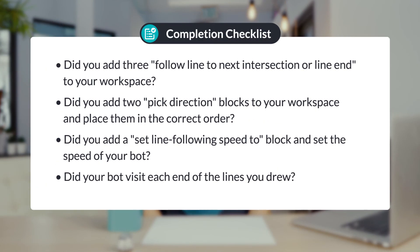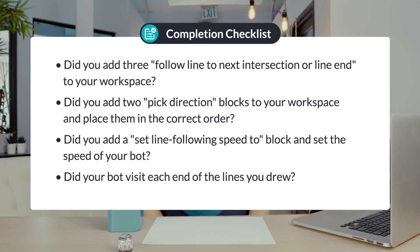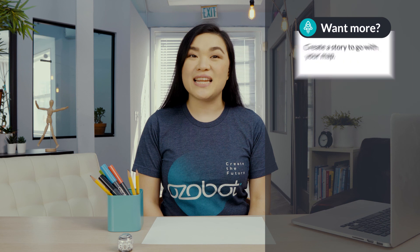Excellent work. Let's double-check that you've completed all the steps for this lesson. Did you add three Follow Line to Next Intersection or Line End blocks to your workspace? Did you add two Pick Direction blocks in the correct order? Did you add a Set Line Following Speed block and set the speed? Did your bot visit each end of the lines you drew? If you're looking for more to do, you can draw more lines on your map and code your bot to visit each line end.